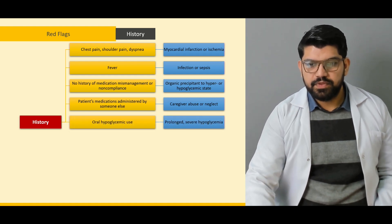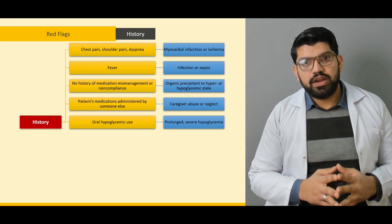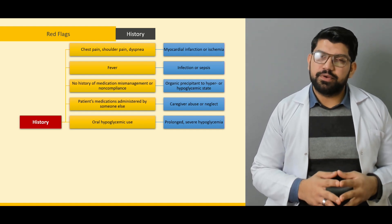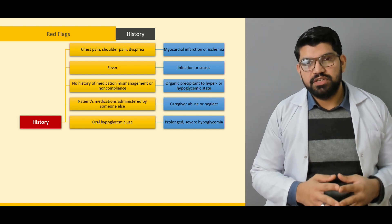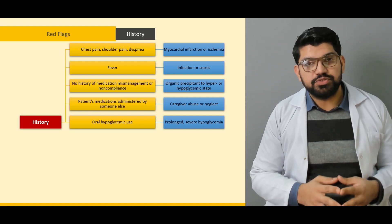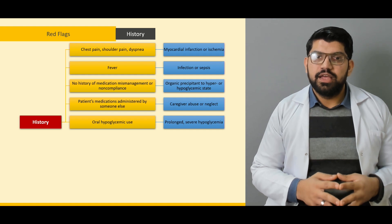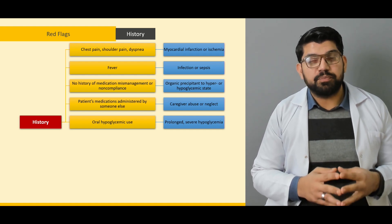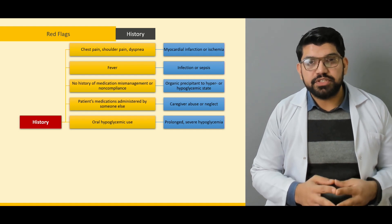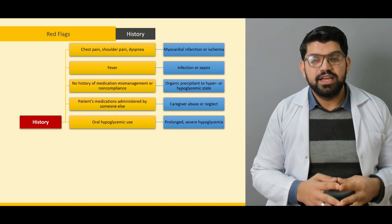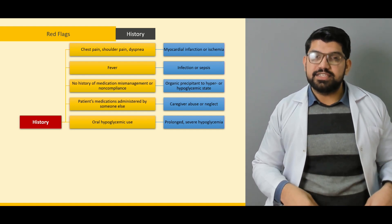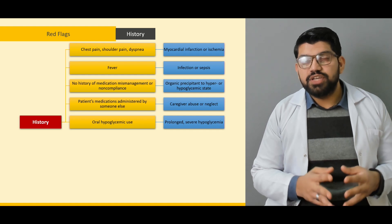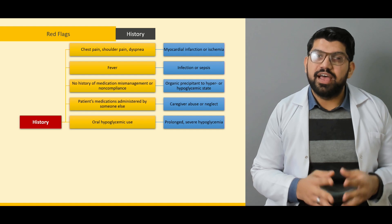Oral hypoglycemic use can lead to prolonged severe hypoglycemia. Why is oral hypoglycemic use at times fatal? Because the half-life of most oral hypoglycemics takes hours — for example, 12 hours. So the patient will remain in a hypoglycemic state if not treated adequately for at least 12 hours. These patients are prone to neurological deficits because of prolonged hypoglycemia. Recurrent infections, diabetic ketoacidosis, and hyperosmolar hyperglycemic state are also concerns. These patients should be monitored for an ample amount of time so that the effect of the oral hypoglycemic wears off and the patient is stable to go home.